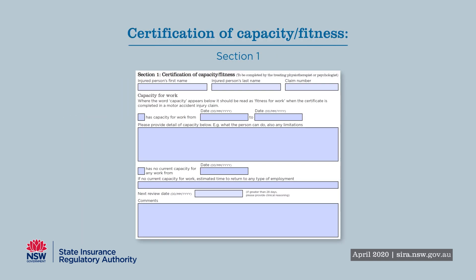In Section 1, this is where you reflect a person's capacity or fitness for work. Just because a person's position or employment is not currently available does not mean that they have no capacity. In the current environment of COVID-19, it is imperative that a person who has capacity is certified with capacity to work so they remain work ready, connected, and where required receive assistance in returning to work — for example, return to work assistance from a rehabilitation provider.